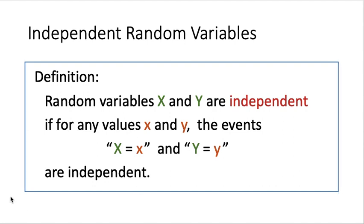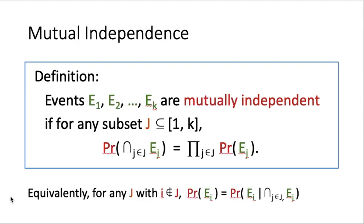This is about independence among two random variables. But we can also define a concept called mutual independence. Let me define mutual independence on events first. Given a set of events E1, E2, E3 up to Ek, we say they are mutually independent if for any subset of these events, the probability that all the selected events happen at the same time equals the product of the probabilities of each individual event inside the selected set.